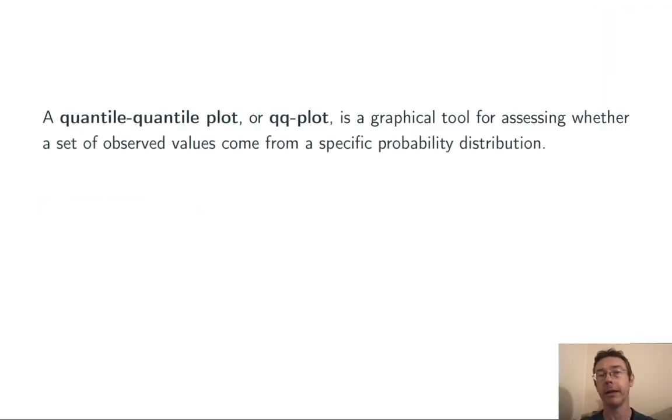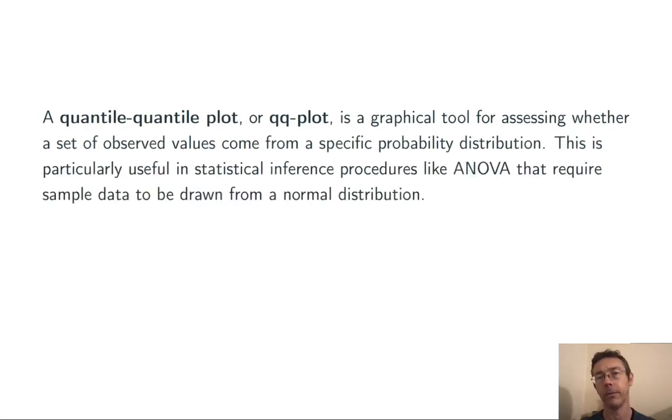A QQ plot is just a qualitative tool for assessing whether or not sample data could plausibly have come from some specified probability distribution, usually a normal distribution. This is particularly useful if we're gearing up to do some sort of statistical inference, and the procedure we're going to use is assuming that the data is coming from that distribution. Like ANOVA assumes that the data is coming from normal distributions.